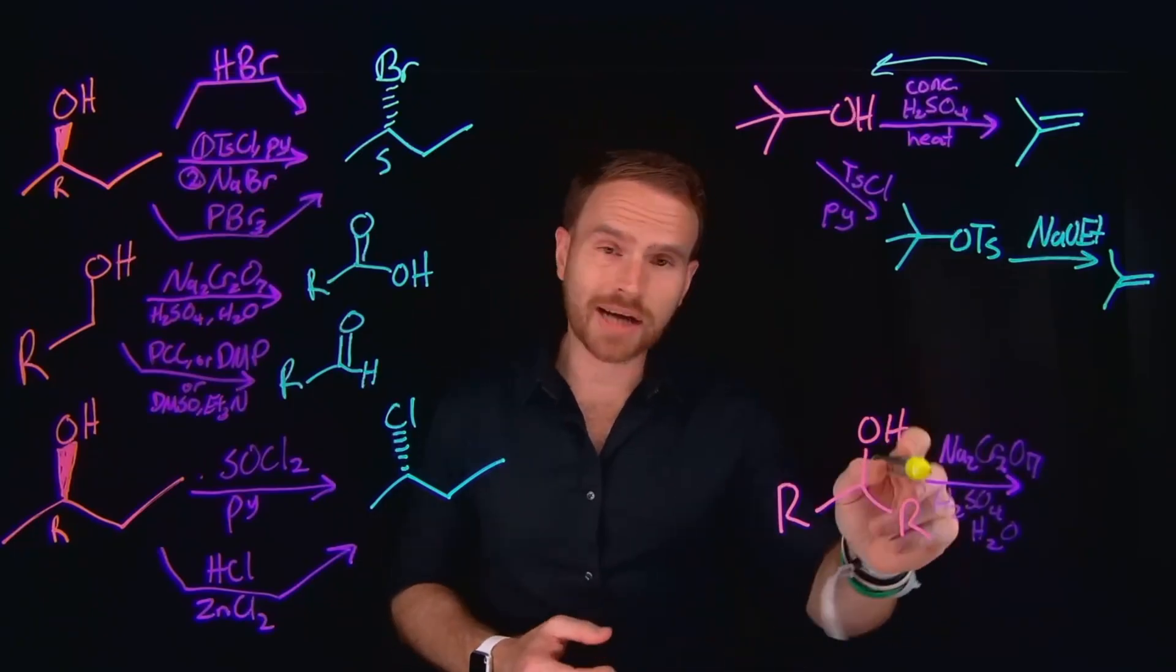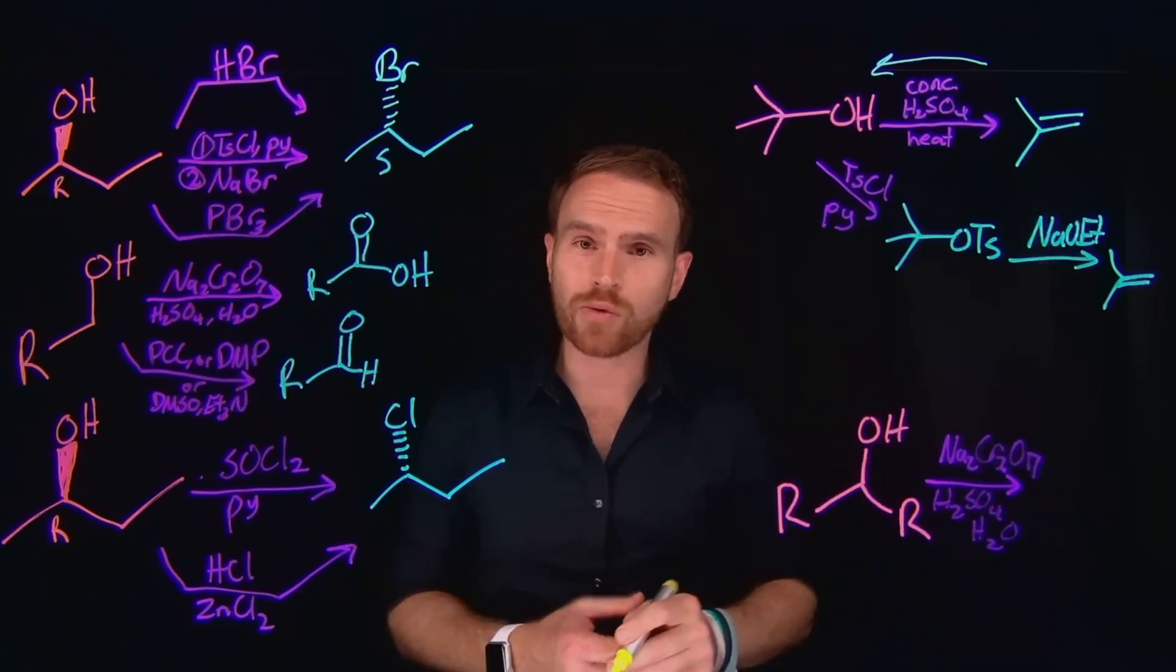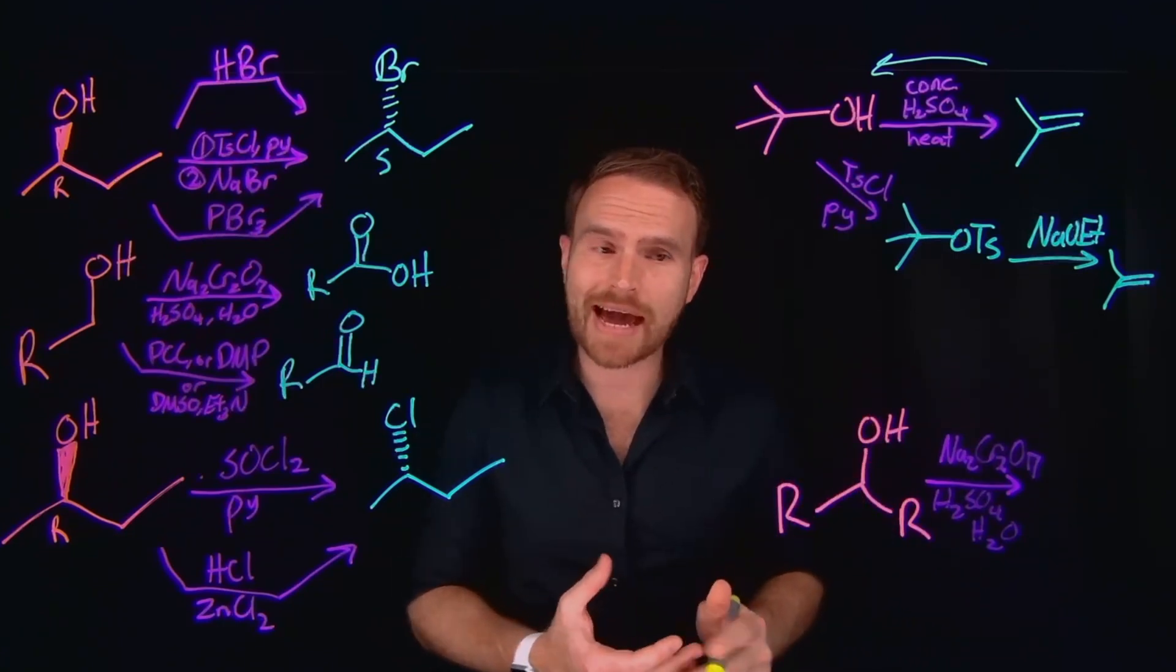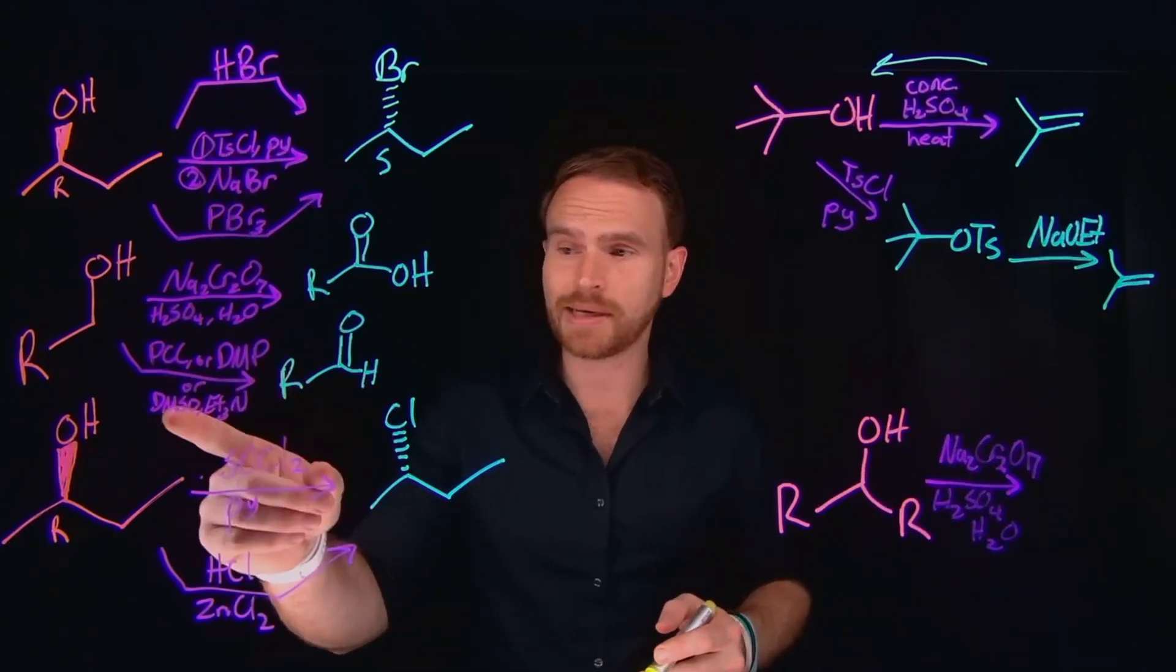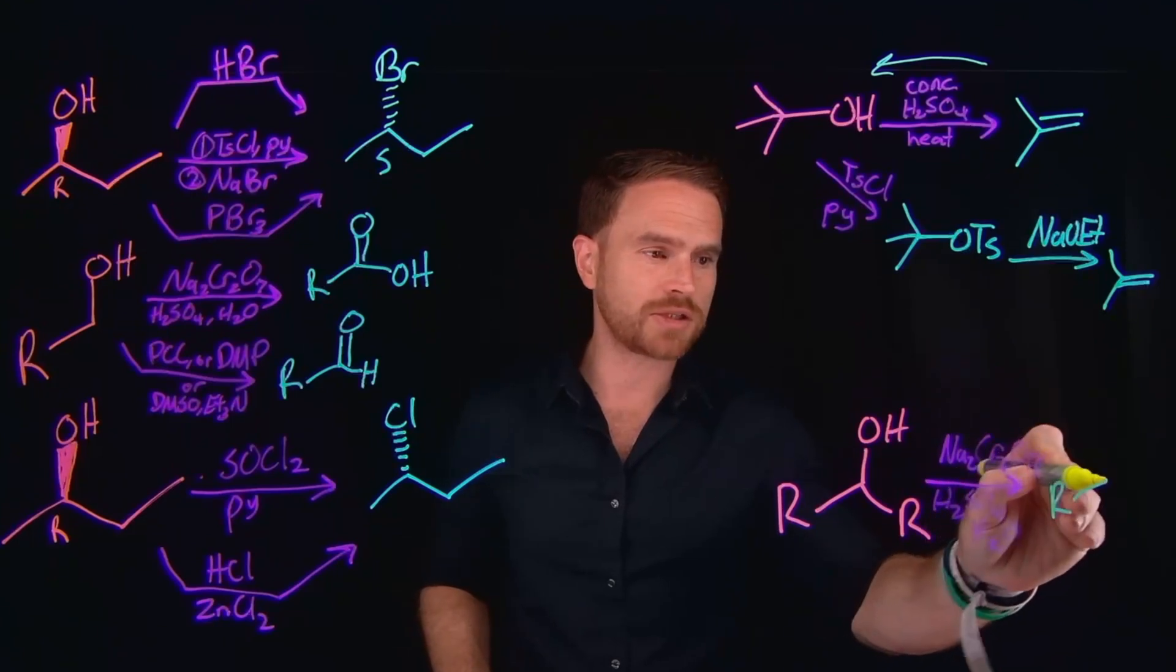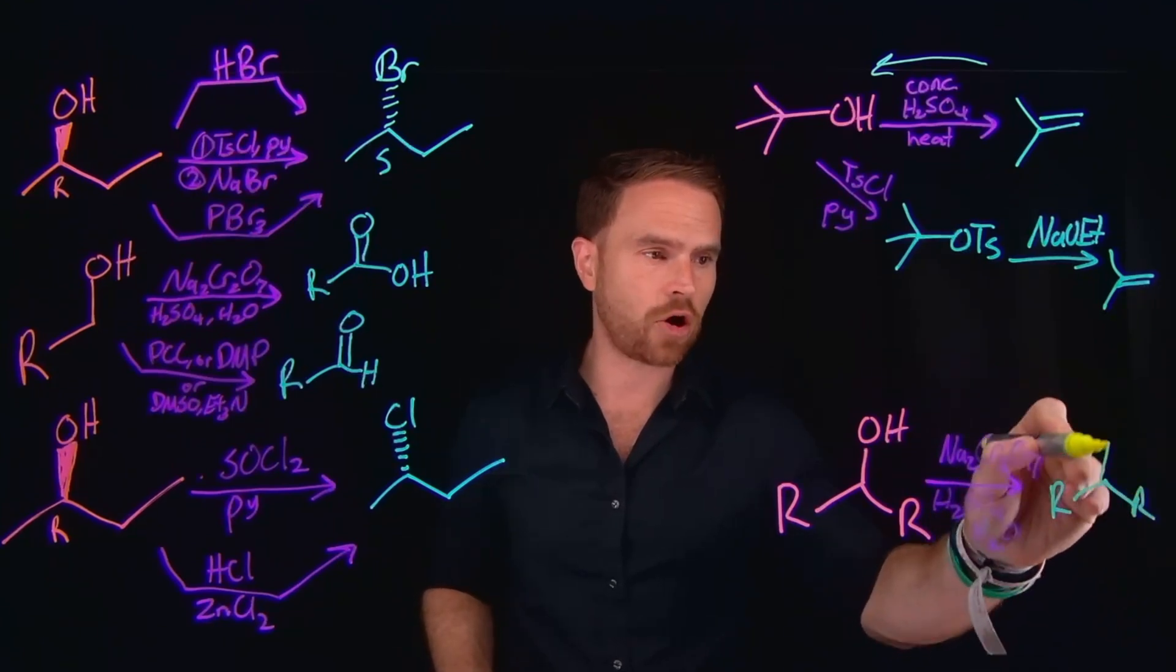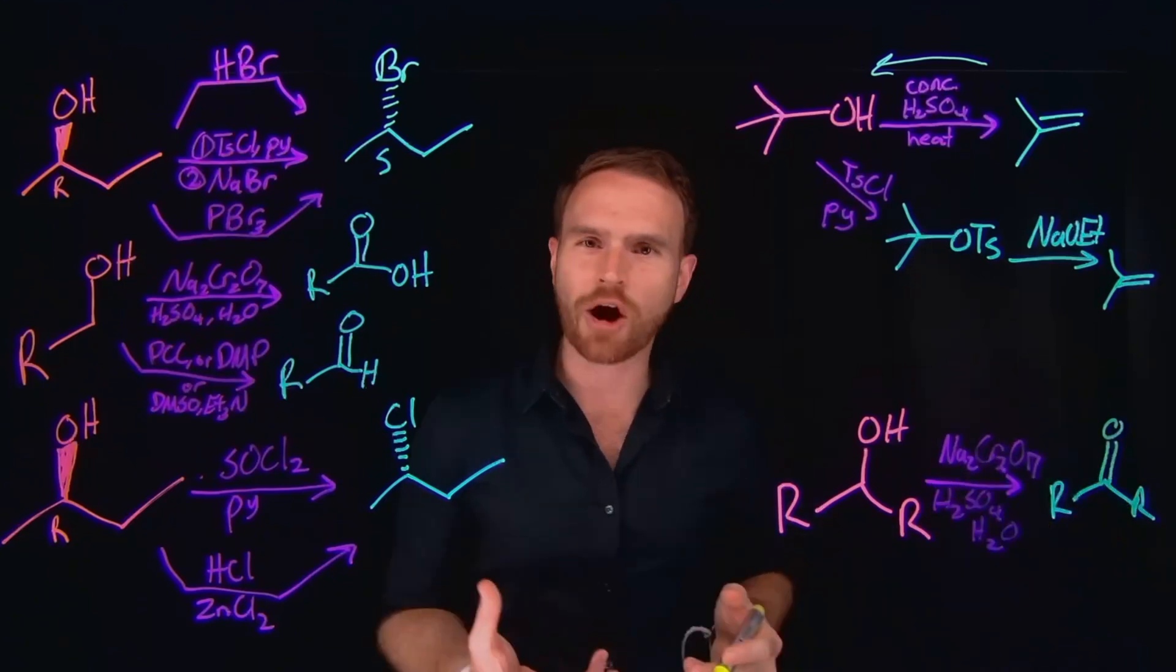For the next reaction, it's another oxidation reaction. Except notice in this case, you have a secondary alcohol, which means we won't be forming a carboxylic acid, which is why there's only one set of conditions. Although PCC, DMP, and DMSO would also suffice, each of these are going to generate what's known as a ketone. So a carbon-to-oxygen double bond, where the carbonyl carbon has two alkyl chains coming off of it.